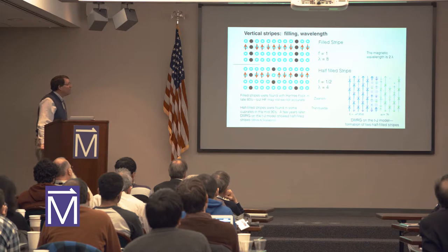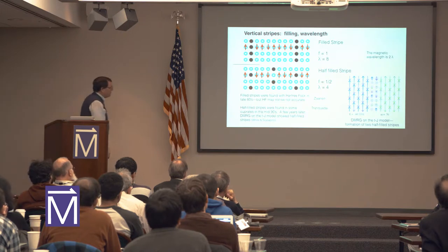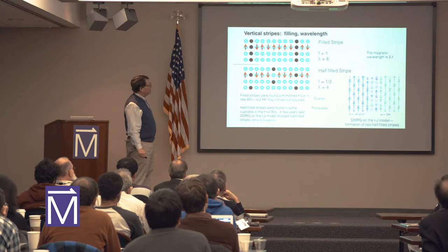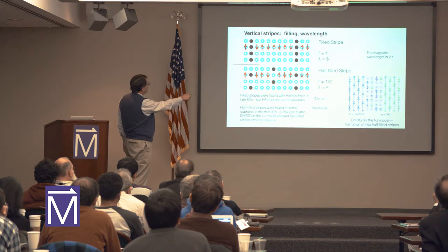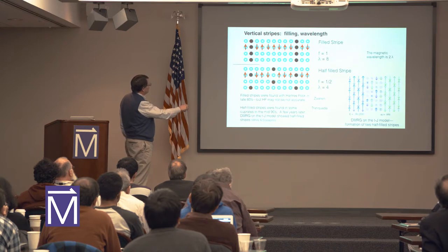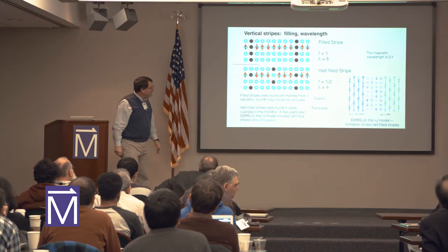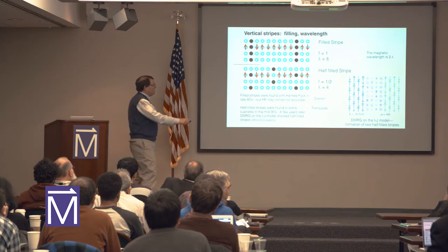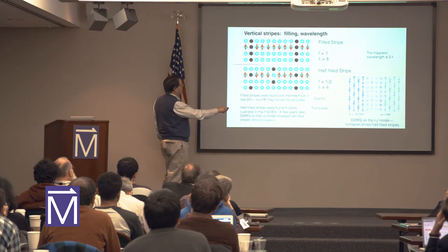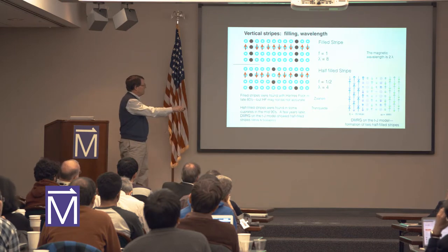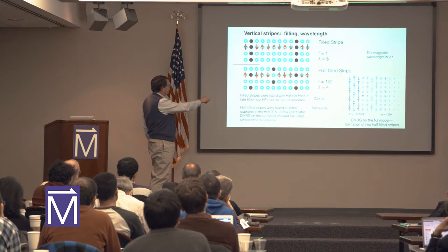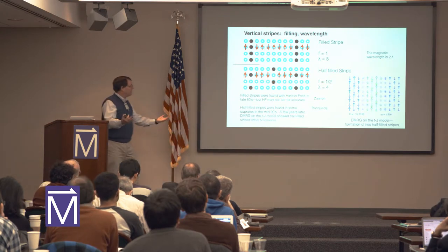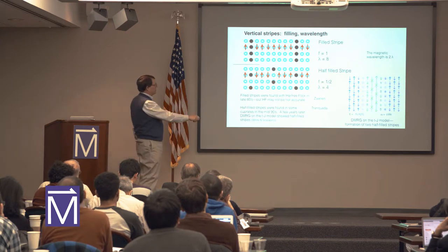The vertical stripes — we're working mostly at a filling of one-eighth, or a doping of one-eighth. The traditional stripe state is a filled stripe: at one-eighth doping the distance between stripes is eight, and the magnetic wavelength is twice the charge wavelength λ. So we'd say this has filling one. But the half-filled stripes have just half the density along a stripe, and keeping the filling constant, they have half the wavelength, so λ equals four.